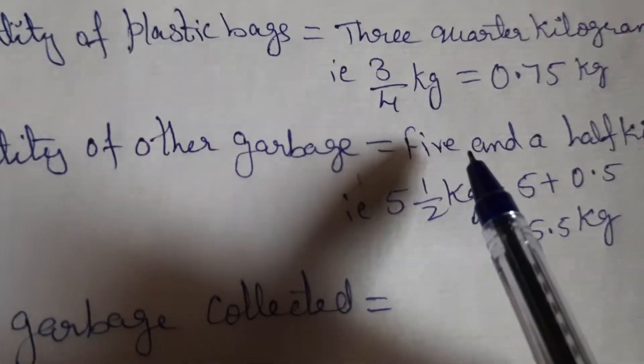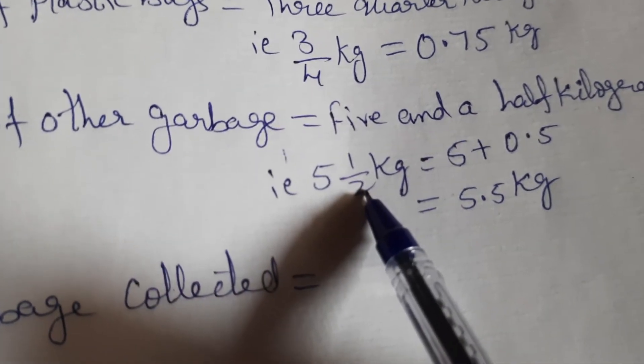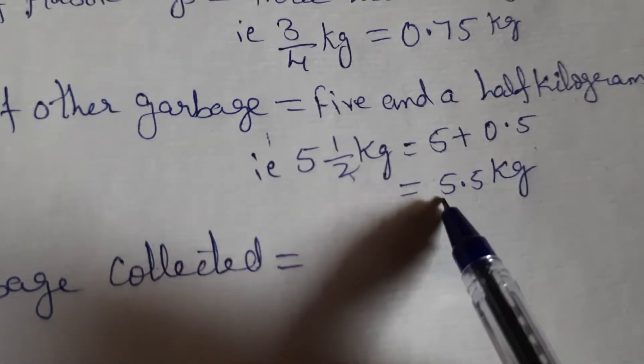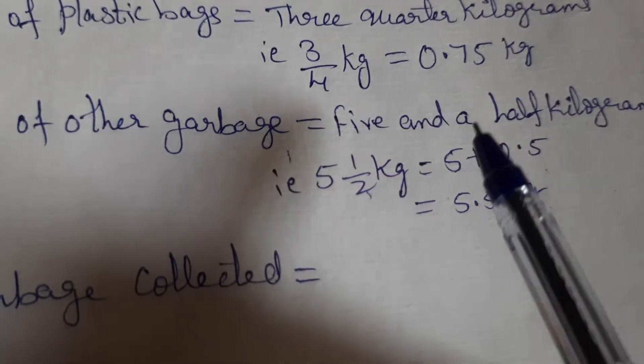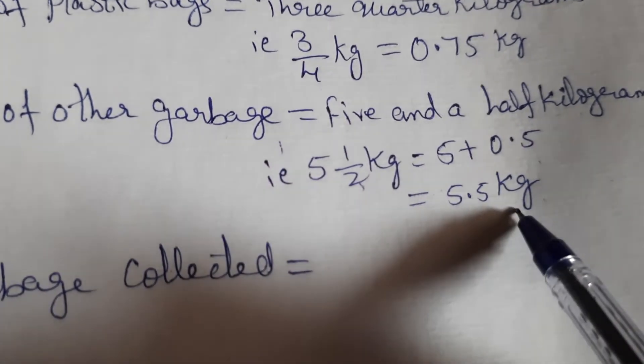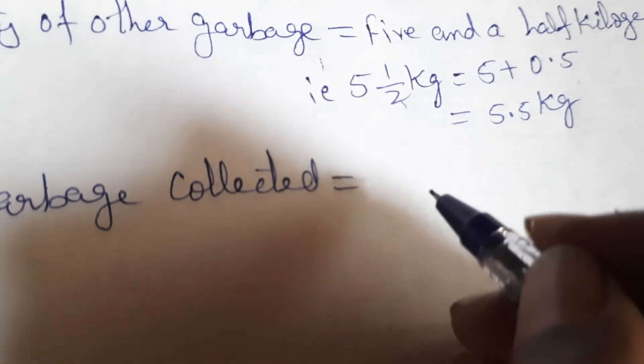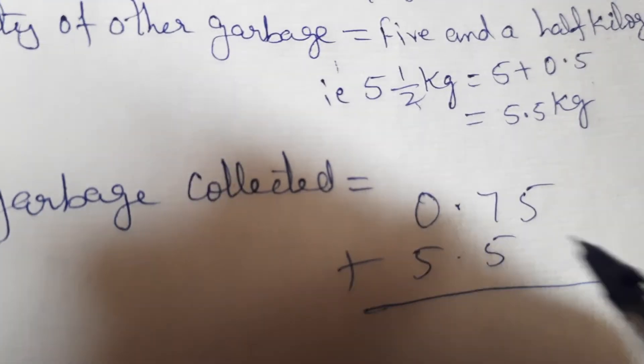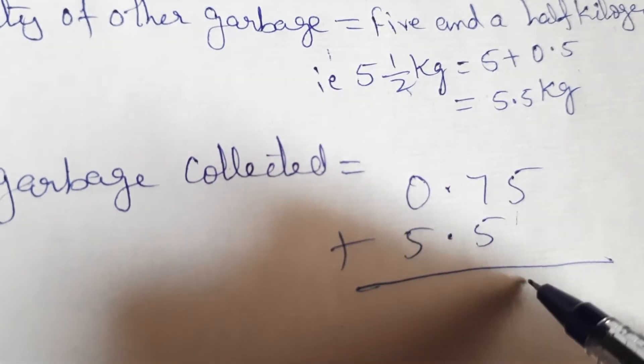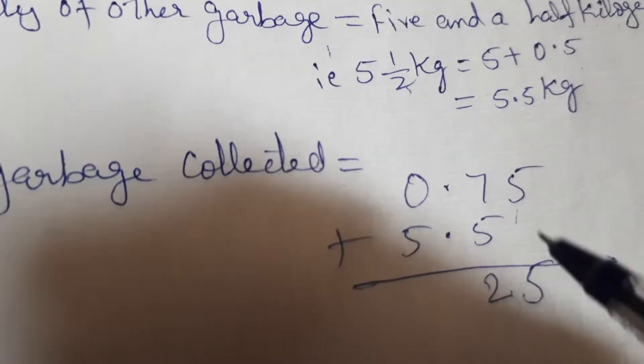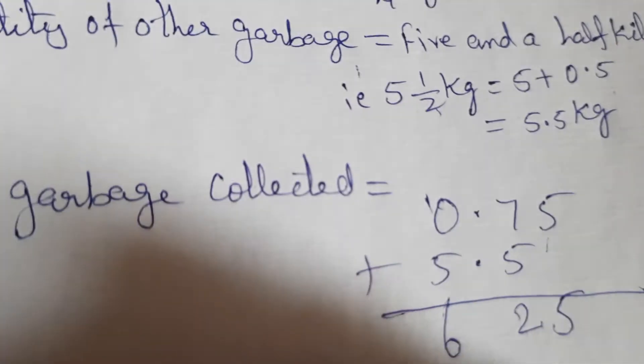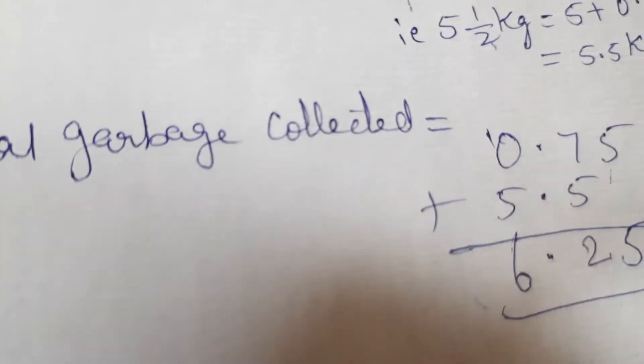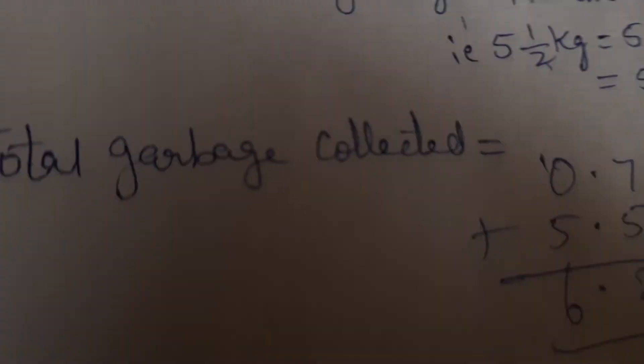Okay. Quantity of other garbage, 5 and a half kilograms that is 5 and a half kg. So 5 plus 0.5. 1 upon 2 you know it is 0.5. Decimal fractions we have learnt it. So adding we are getting 5.5 kg. So total garbage collected will be 0.75 plus 5.5. Okay. So total garbage collected we can add over here children. 0.75 plus 5.5. Okay. Point will come exactly below you. So your 5 will be brought down. 7 plus 5 is 12. 2, 1 carried on 5 or 0. So 5 plus 1 is 6. So it is 6.25. That means 6 kg 25 grams. 6 kg 25 grams or 6 kilograms 25 grams.